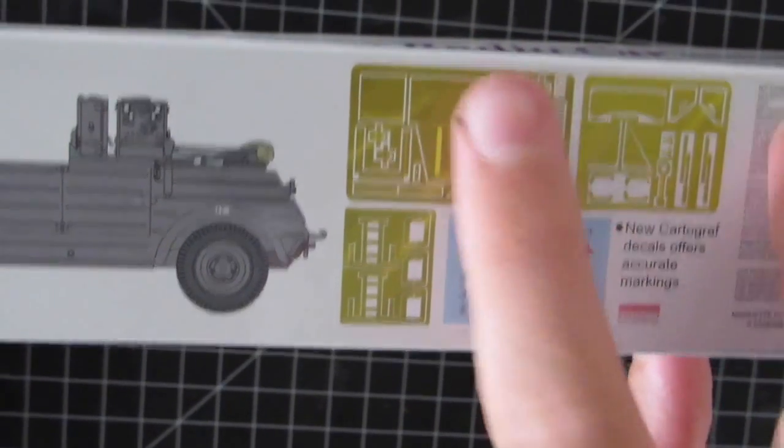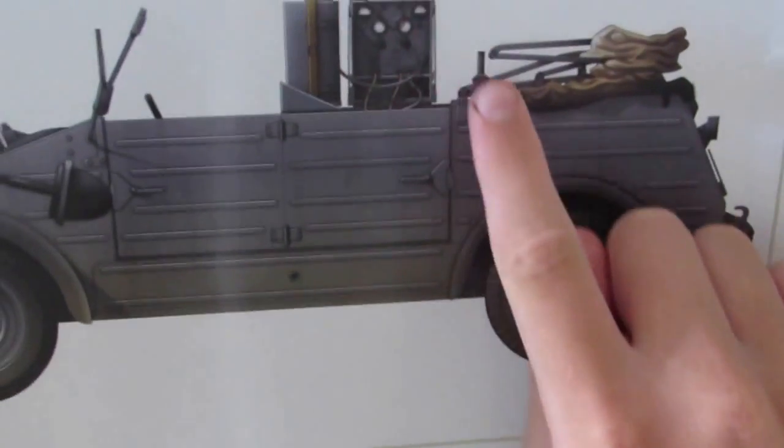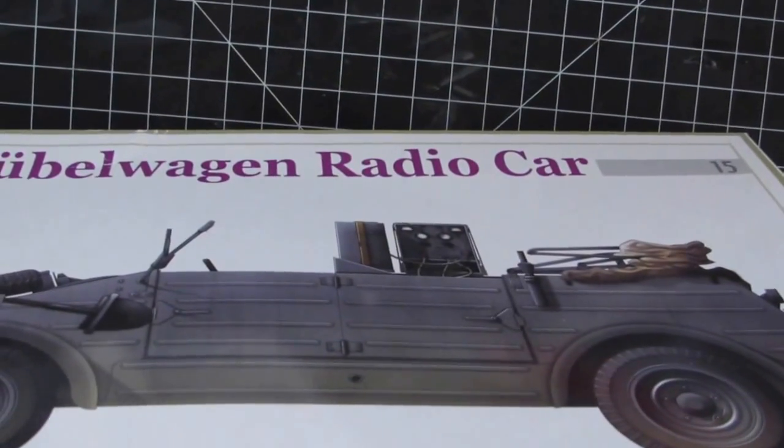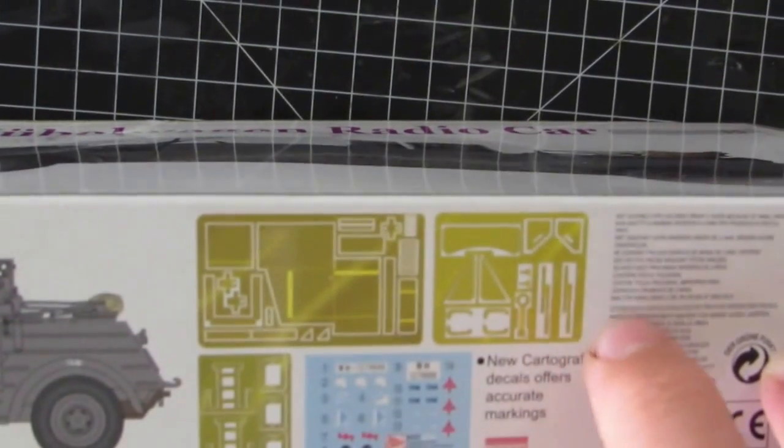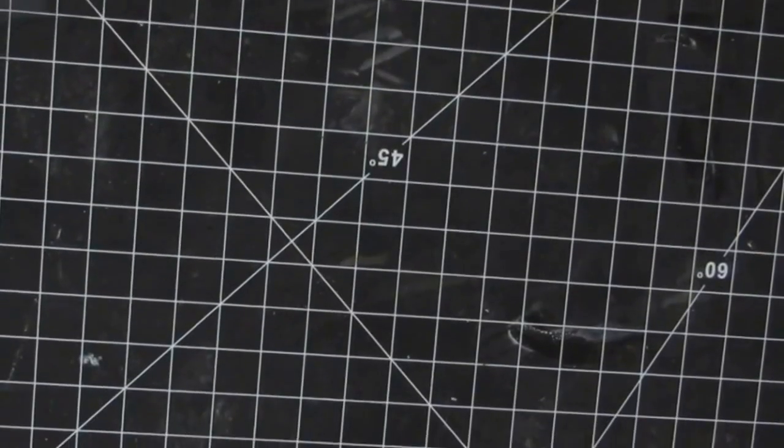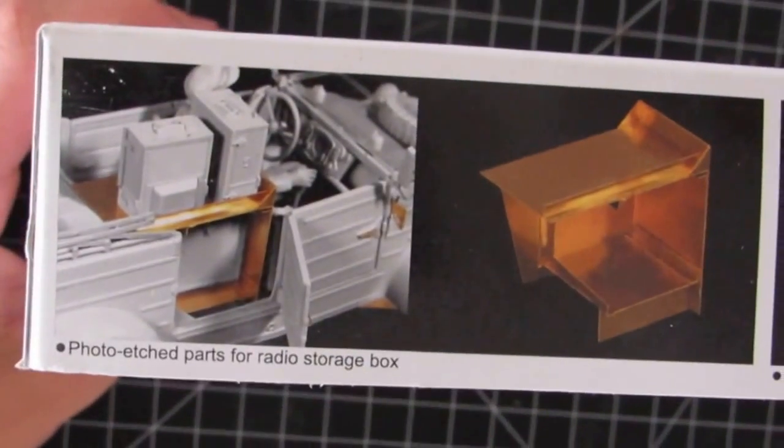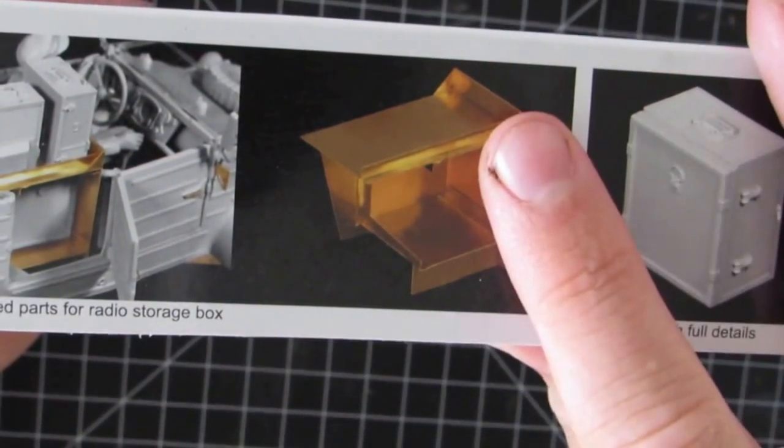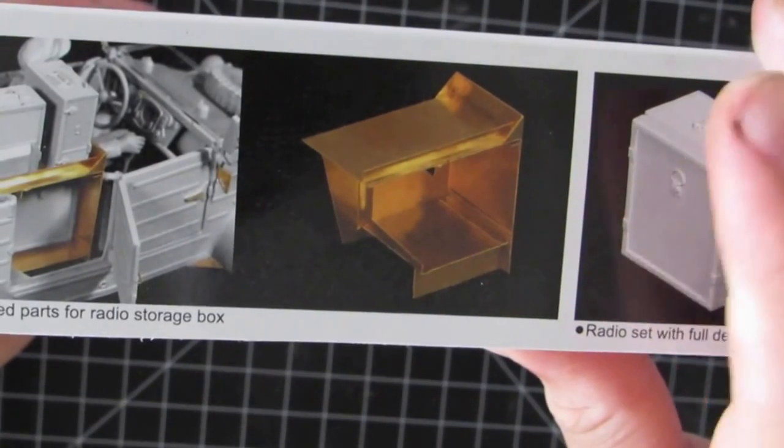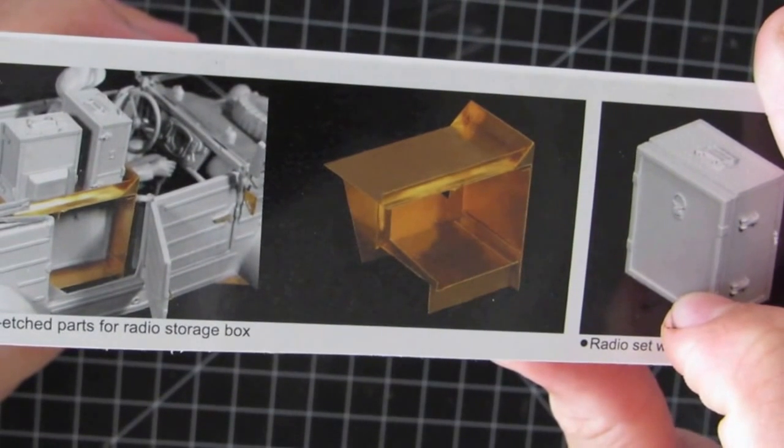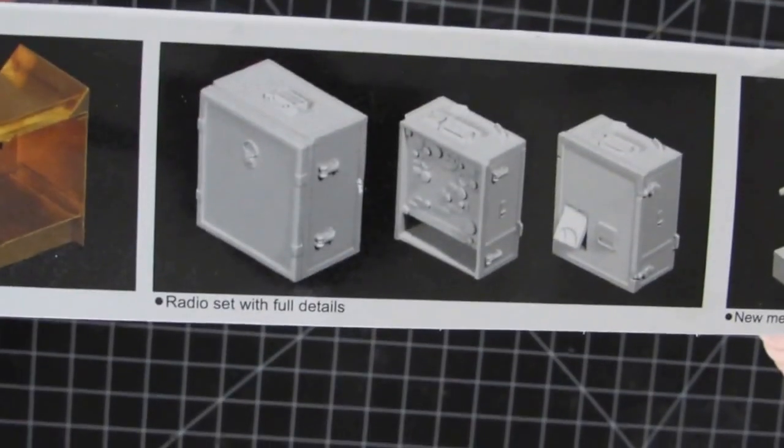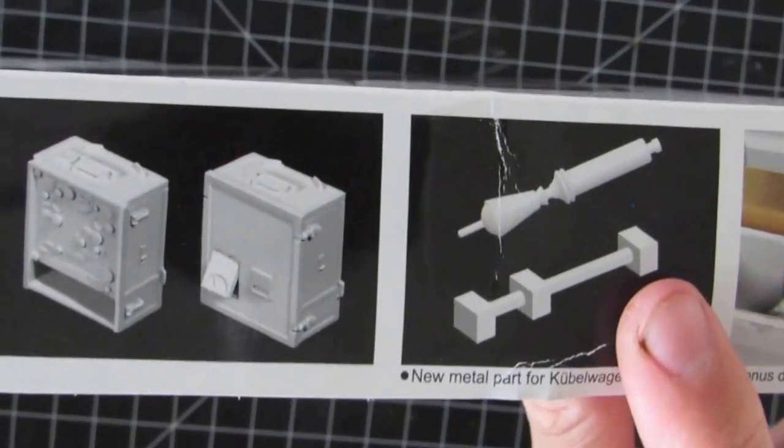Three frets. That one's mainly the holder for the radio itself, like the bracket. Those are for jerry cans. Cartograph decals. Looks like some clamps on there. I don't know what those big pieces are. Just kind of showing off the bracket. That's it, fully built up. And then machine metal parts for the antenna.